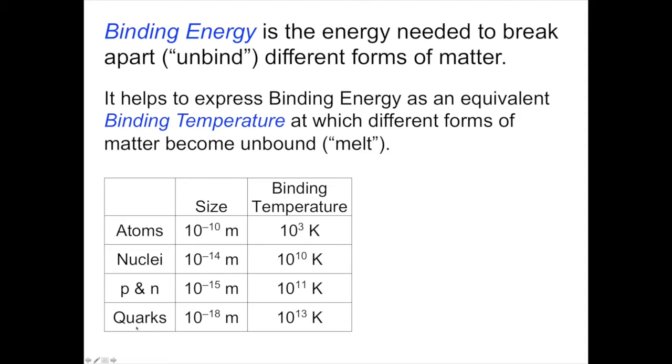Finally, the most fundamental form of matter of all, quarks. The individual particles of which all heavy particles are made up have a size scale three orders of magnitude smaller still, at 10^-18 meters, and have binding temperatures of 10^13 degrees Kelvin. When the temperature exceeds 10^13 degrees Kelvin, quarks and antiquarks come into equilibrium with photons, and we no longer have stable quarks existing. The quarks melt into a sea of mass energy.